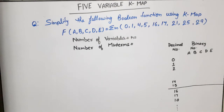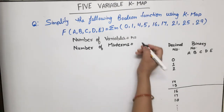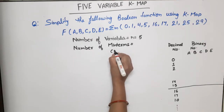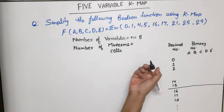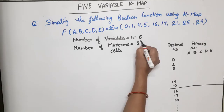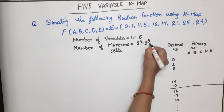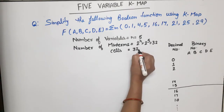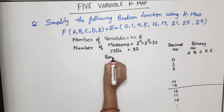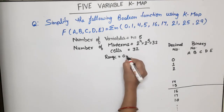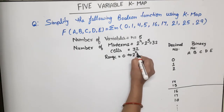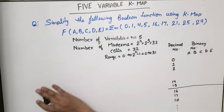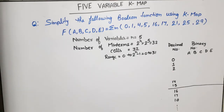Now, number of variables n is equal to 5. So the number of minterms, or number of cells in the K-map, will be 2 raised to power n, which is 2 raised to power 5, equal to 32. So there will be 32 minterms and 32 cells. The range of these numbers will be 0 to 2 raised to power n minus 1, that is 0 to 31.